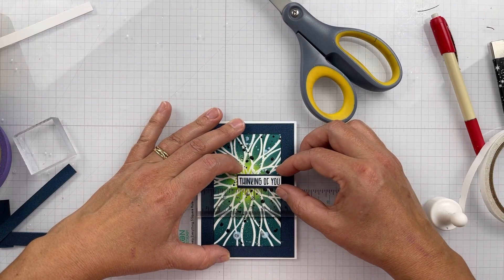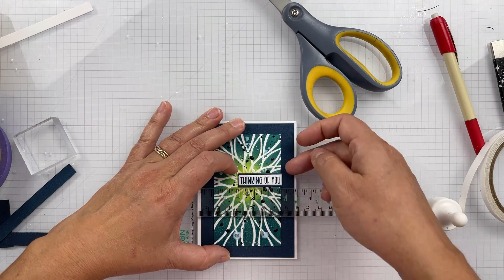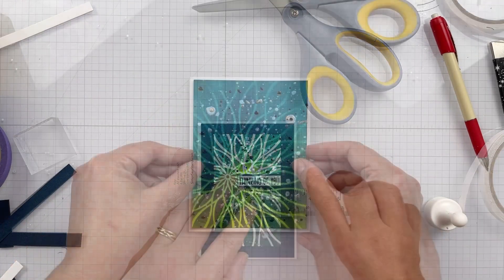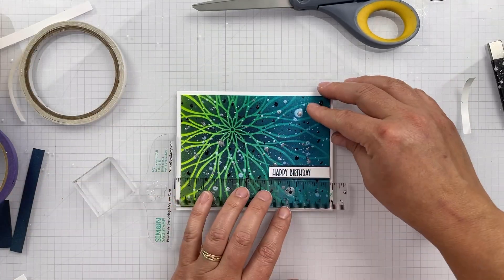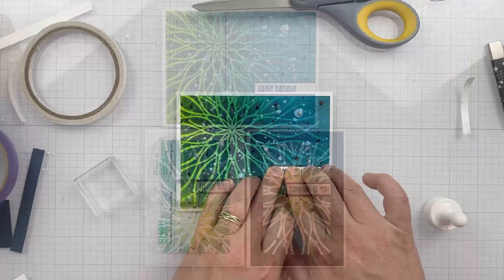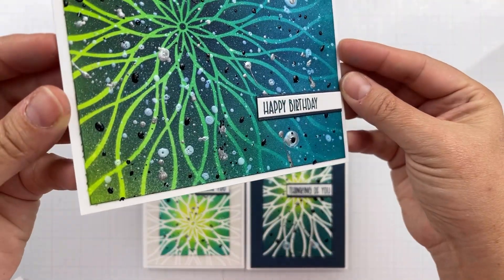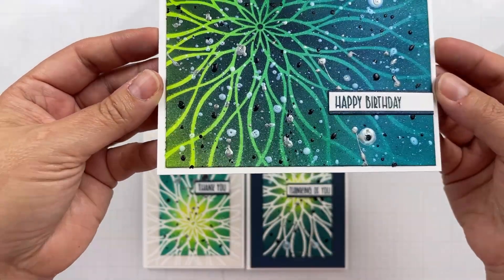Piecing everything together with double-sided adhesive all around. These sentiments come from the Everyday Sentiments set and I've layered those onto a piece of Stardream Metallic Lapis Lazuli cardstock, that dark blue, and it gives a little subtle shimmer to that.